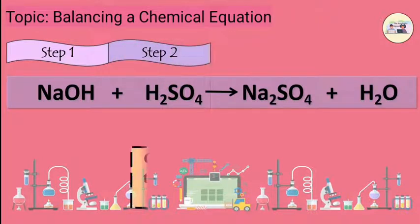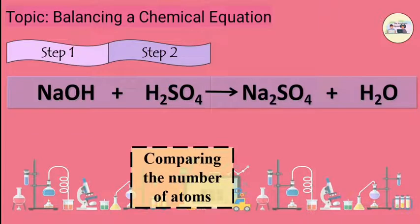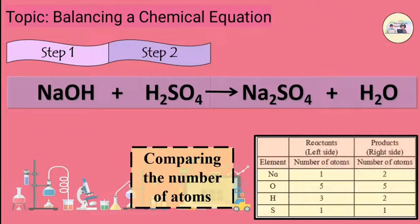Check whether the equation is balanced or not by comparing the number of atoms of the various elements present on both sides of the equation. It is seen that the number of atoms of all the elements on the two sides are not the same. It means that the equation is not balanced.